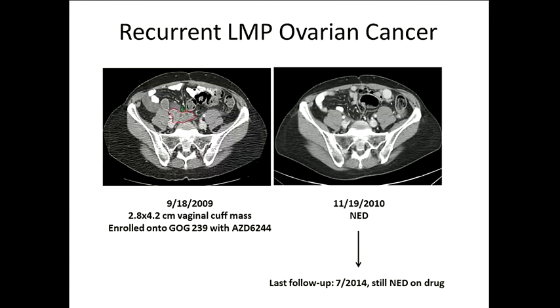This was the only woman who achieved a complete response, and she's still disease-free over five years later. This drug was felt to be relatively inactive — there was a response rate of about 10% on the clinical trial. And if you go back to the published clinical paper, there's actually a note in the discussion saying molecular profiling was of no utility in determining why this individual responded to the MEK inhibitor.